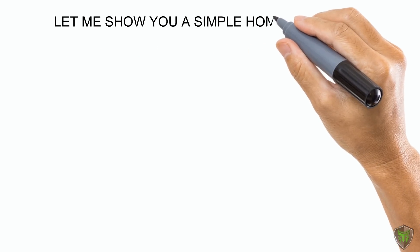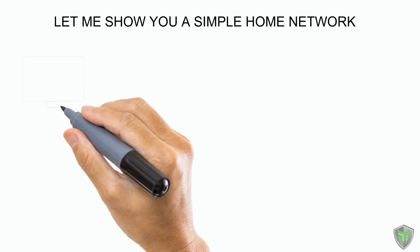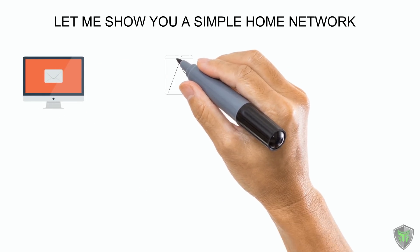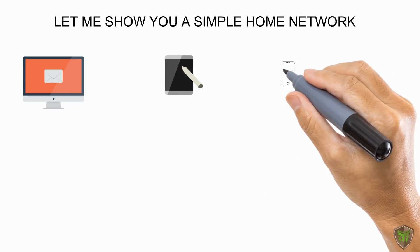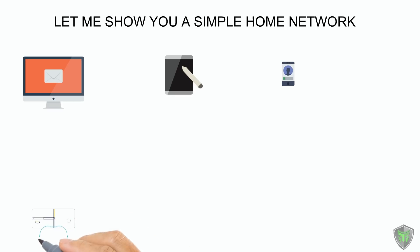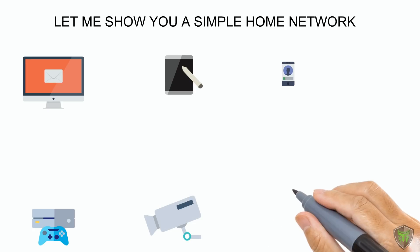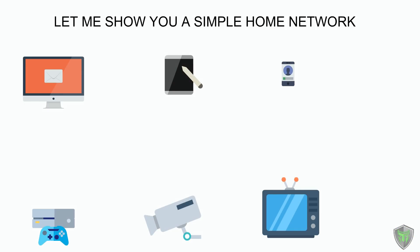Let me show you a simple home network. I have my computer here, this is my tablet, here is my smartphone, of course my Xbox here, my CCTV security camera here, and my Smart TV. These are basically six nodes in my home. A node is nothing but a device on the network. These six devices are sitting at six different places and are not connected to each other. So for connecting all these devices and making them communicate with each other or to access the internet, we will use a device called a router.